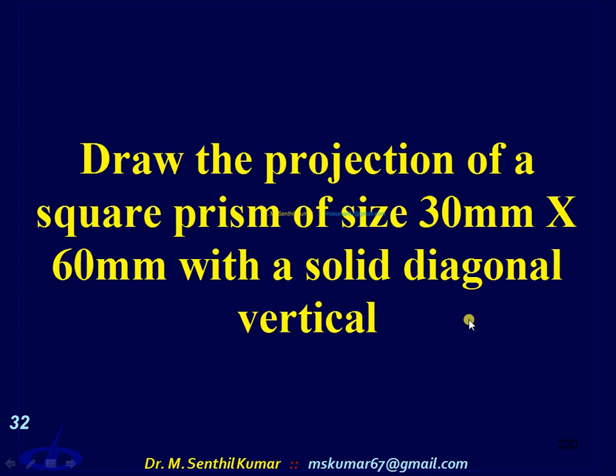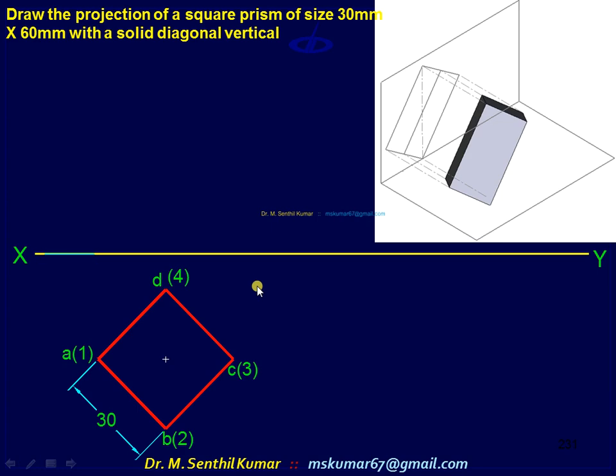So one solid diagonal will be vertical, that is perpendicular to XY. So for that, first you draw a square in top view first, this way. I will tell you why when I draw the corresponding front view. That time only will come to know. So draw a square which is equally inclined to XY.